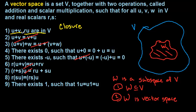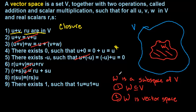Notice that if these two closure properties hold, we get some other things for free. For example, if scalar multiplication holds for everyone, then there is a zero vector in our subspace, because the scalar R could have been zero. But let's move to an example and see how this plays out.